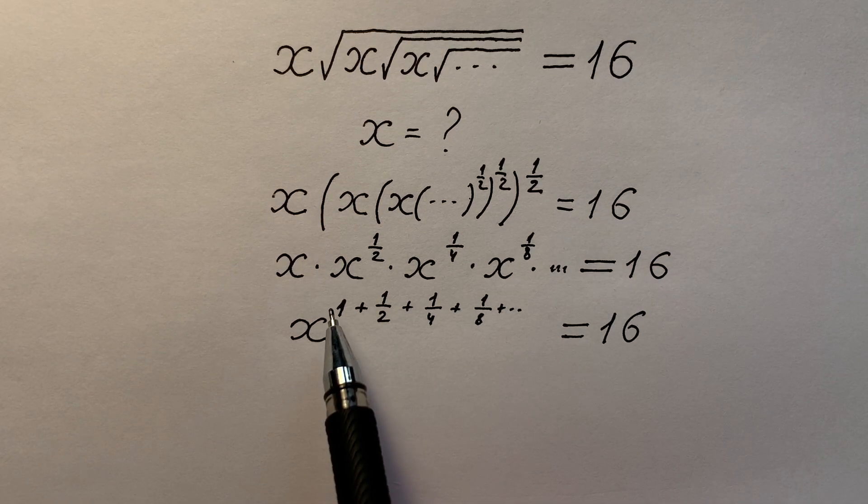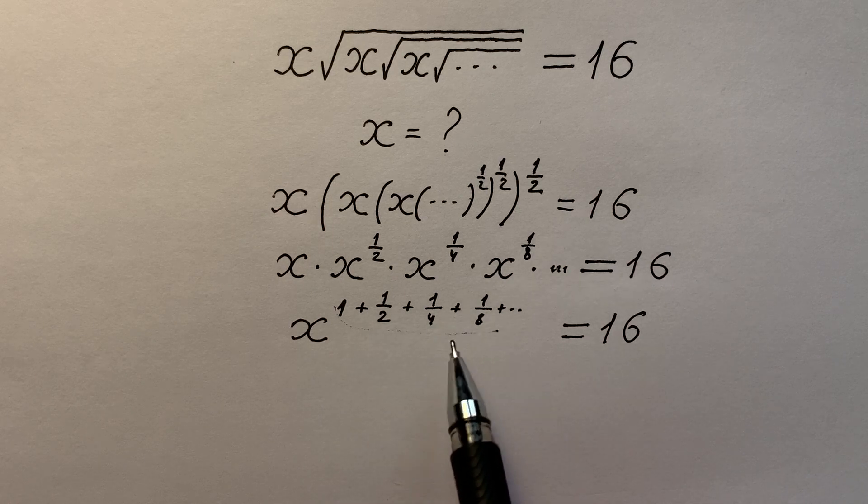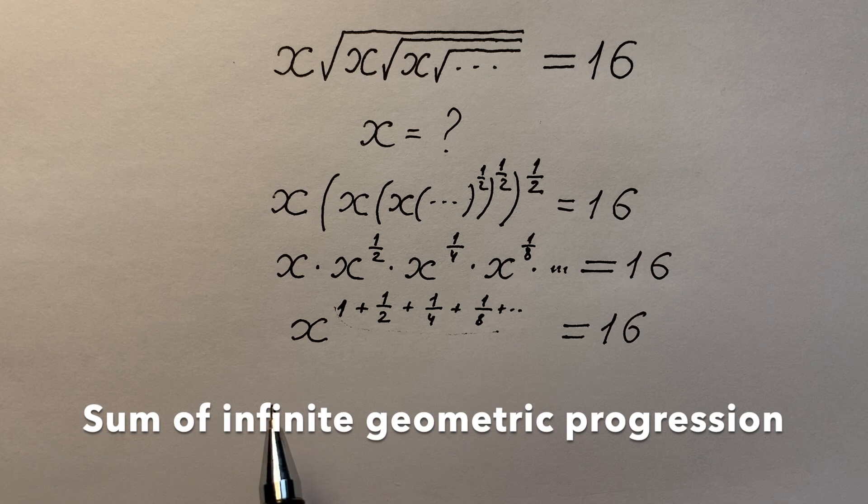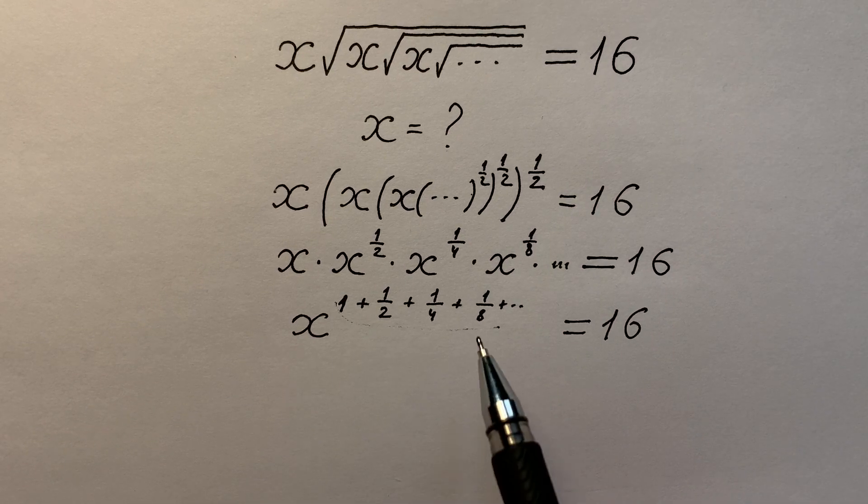What we can see in the power of x? Of course this is sum of infinitely decreasing geometric progression. And how we can find the sum?